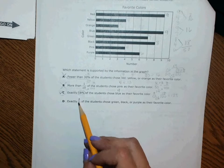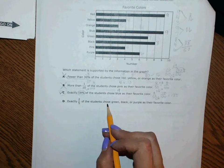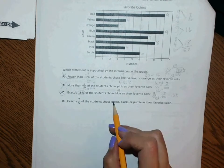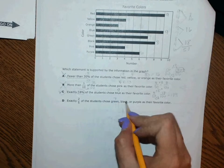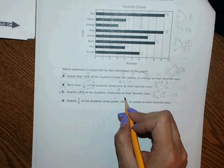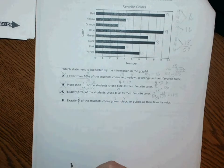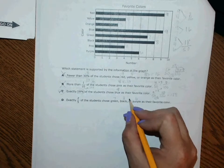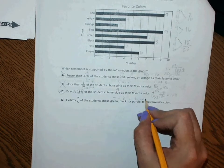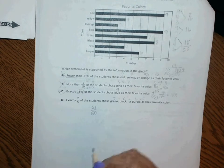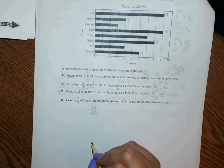It says exactly two-fifths of the students chose green, black, or purple. Green we said 7, black is 8, and purple is 6. Add those together, that's 21, 21 out of 50.